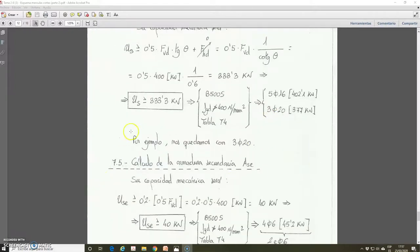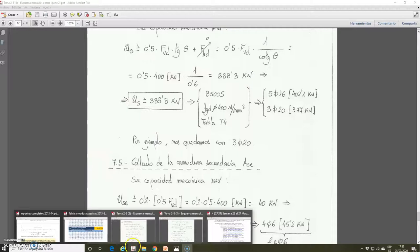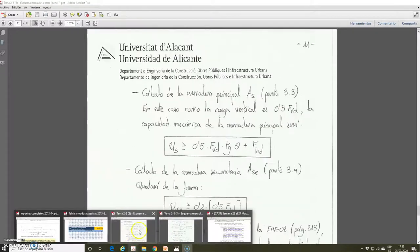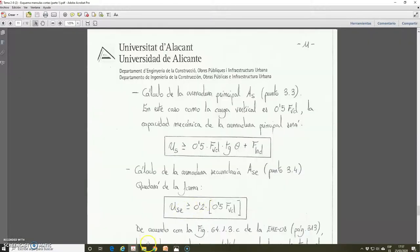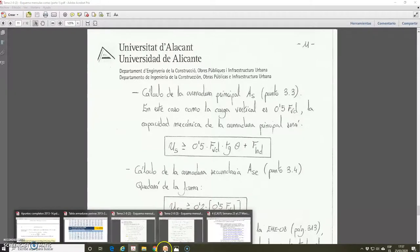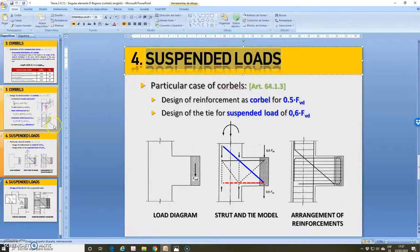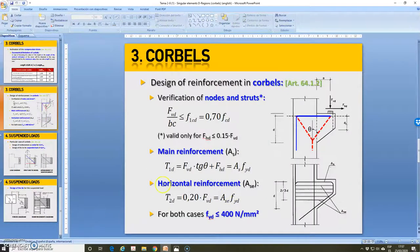And now we are going to calculate the secondary reinforcement of the corbel. The only thing that changes is the same expression that we have. I show you in the PowerPoint. We have here the expression for the horizontal secondary reinforcement in a corbel, and it was this general expression. But in the particular case of corbels with suspended loads, this FBD is changed by 0.5 FBD.